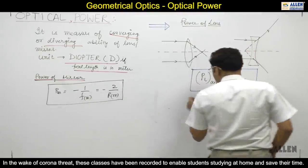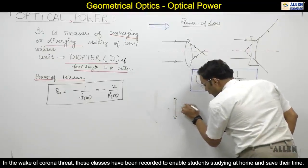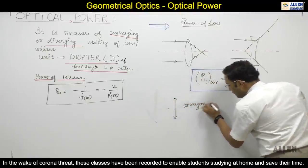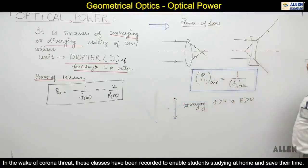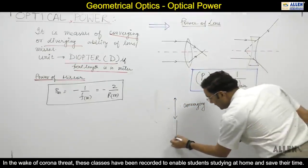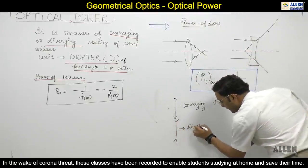So you can understand that if I have a converging lens, then converging lens focal length is positive, so power is positive. If I have a diverging lens, you know diverging lens focal length is negative, so power is negative. Clear?